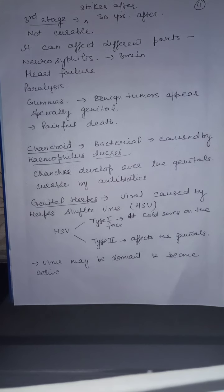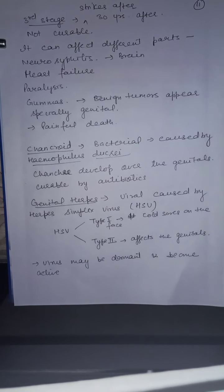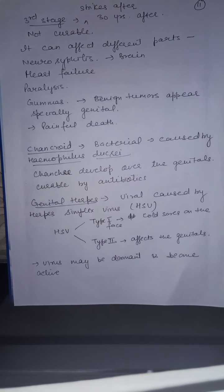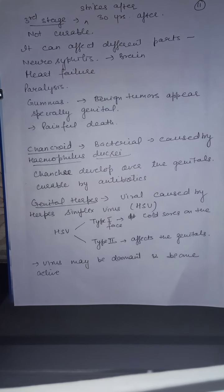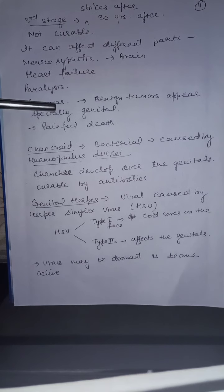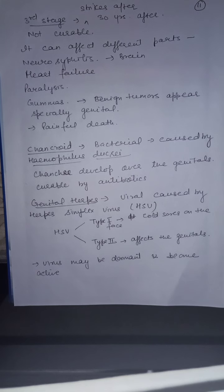The third stage strikes after 30 years. It is not curable and can affect different parts of the body. For example, neurosyphilis — if it affects the brain — can cause heart failure, paralysis, and gummas, which are benign tumors that appear especially in genital areas and are very painful. Death will occur.